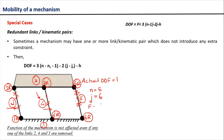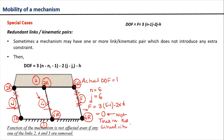Now if we calculate the degree of freedom using the Kutzbach criteria: F equals 3(N minus 1) equals 3(5 minus 1) minus 2J, giving F equal to 0. So when applying the Kutzbach criteria the degree of freedom value we are getting is equal to 0, which is not true in the actual situation. So the Kutzbach criteria gets modified and the resultant degree of freedom has to be calculated by the new particular equation.